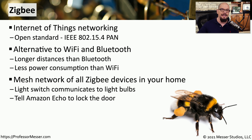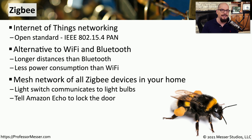In a ZigBee mesh network, devices on one end of the home can hop through other IoT devices to communicate with management stations on the other side. So if you're changing the temperature of your air conditioning controls or modifying the lighting on IoT devices, the commands are eventually communicated through this ZigBee network to control those devices.